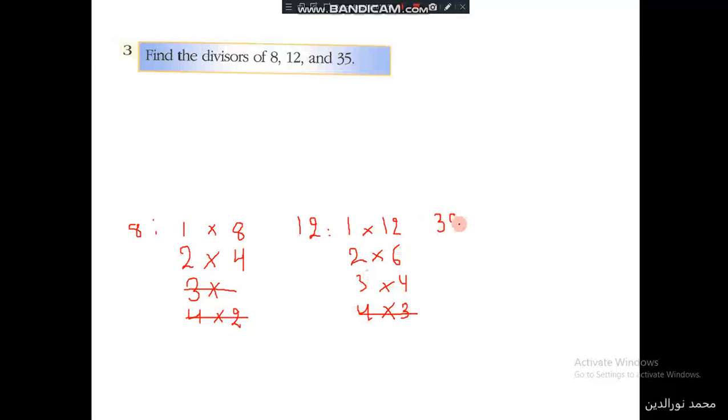For the number 35, it's 1 times 35. 2 times, we cancel it, it's an odd number. 3 times what? Let's find, 5 plus 3 is 8, so it's not a multiple of 3 and it's not divisible by 3. So 3 is not applicable.